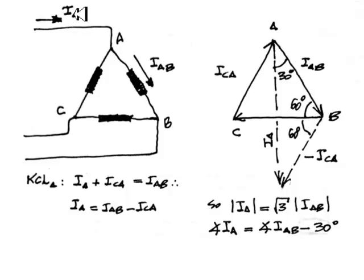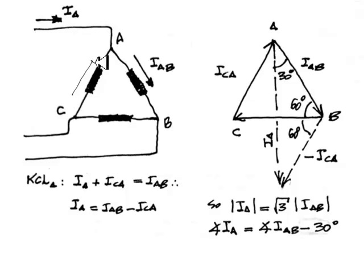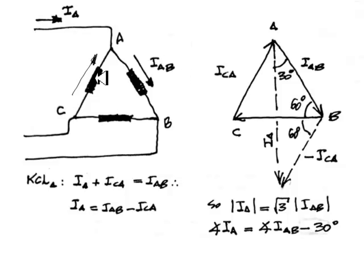What is the relationship between the current entering phase A and the currents in the delta? Out of symmetry and three-phase balance, the three currents in the delta have the same magnitude and they are out of phase by 120 degrees. Now, in node A, we can use a KCL equation and say the sum of all the currents going in — this one and this one — are equal to the current leaving the node: IA plus ICA equals IAB. From there we can solve for the line current IA = IAB minus ICA.